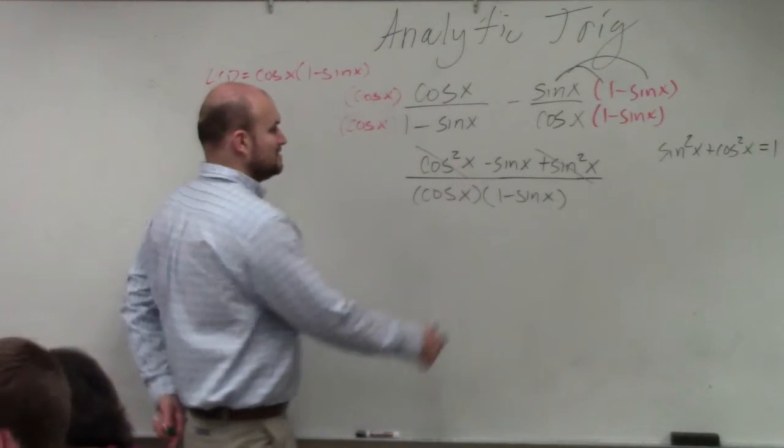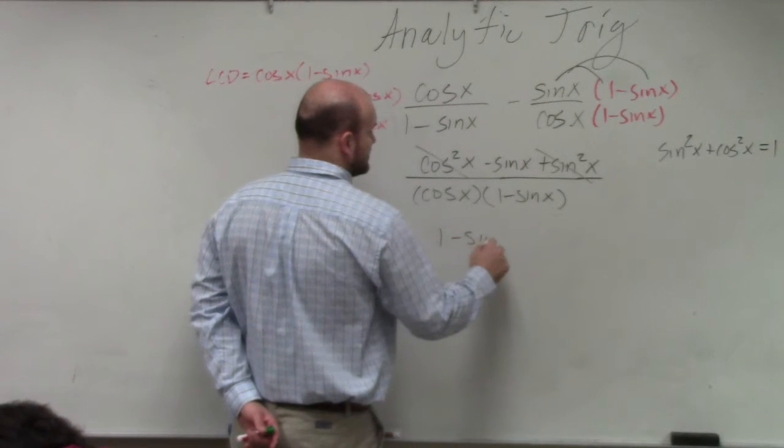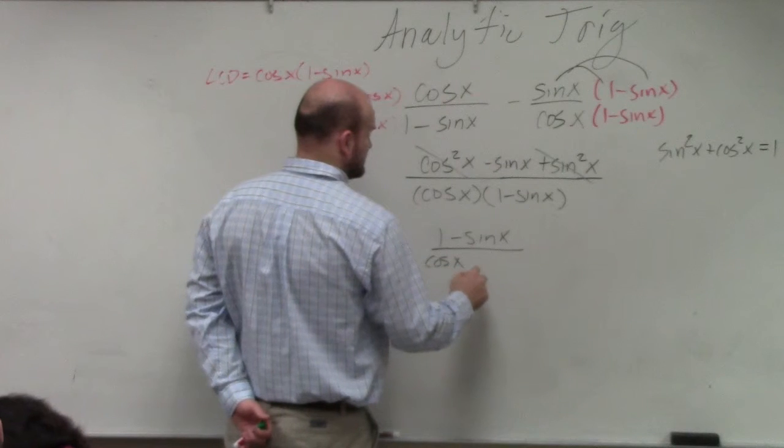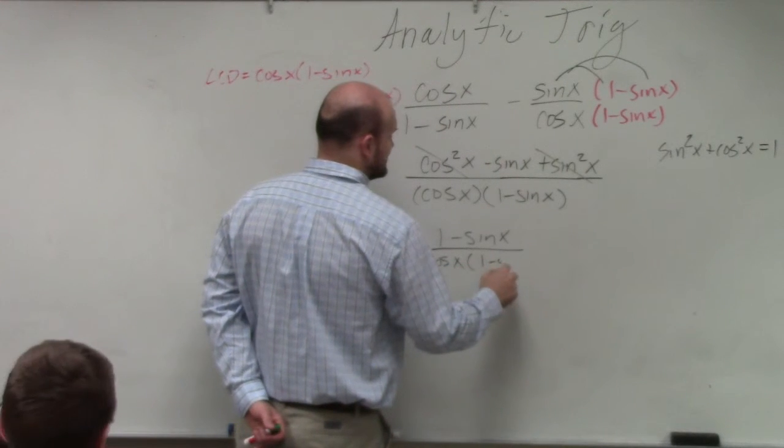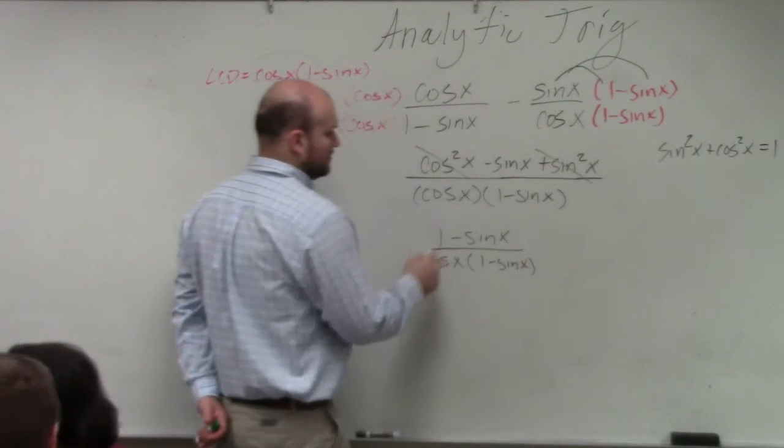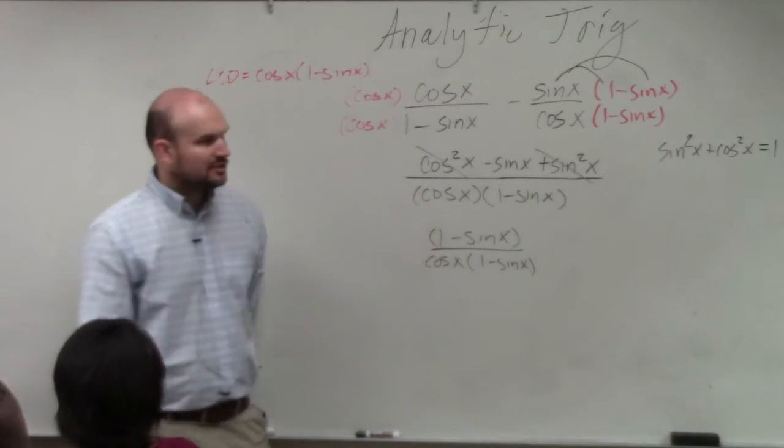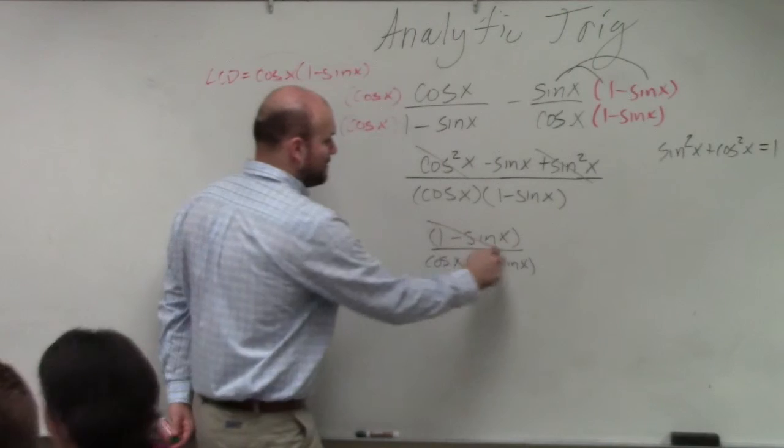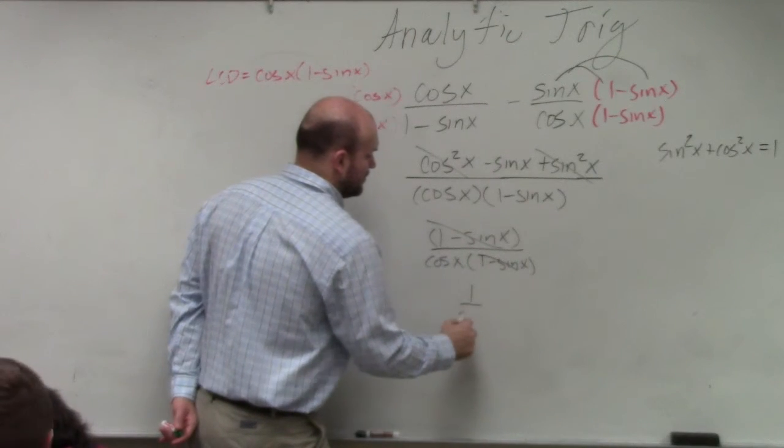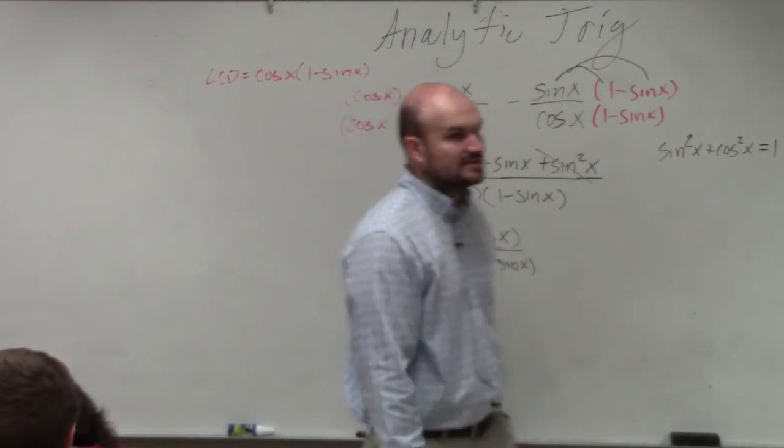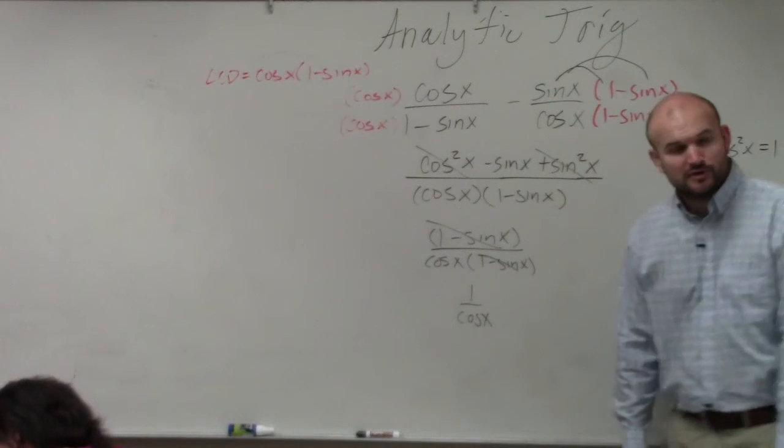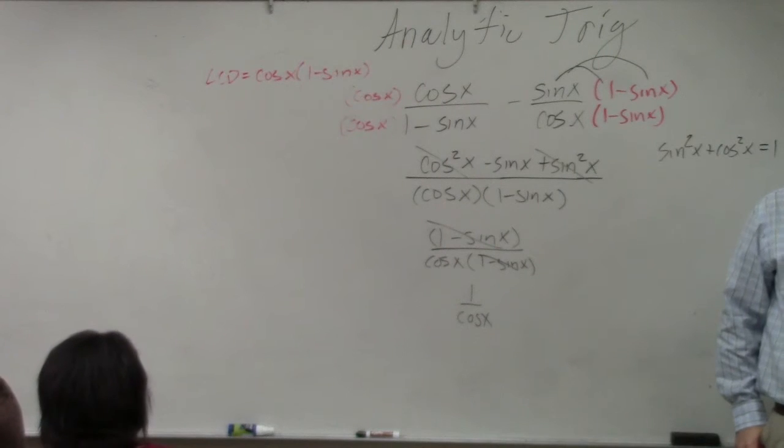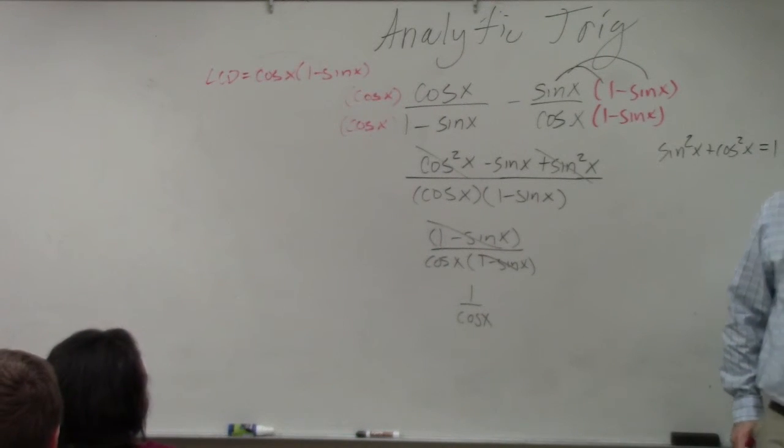So in reality, this is 1 minus sine of x all over cosine of x times 1 minus sine of x. Well, do you guys see that those expressions in the parentheses are exactly the same? So by using the division property, they divide out, which is leaving us with 1 over the cosine of x. Do you guys remember what 1 over cosine of x is? There you go.